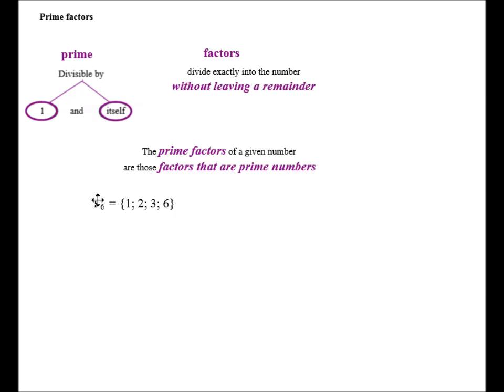If we look at the factors of 6 again, all the factors are 1, 2, 3 and 6. But the Prime Factors, we have to select the Prime Factors. 1 is neither Prime nor Composite. 2 is a Prime Number. 3 is a Prime Number. 6 is a Composite Number. So the Prime Factors are 2 and 3.